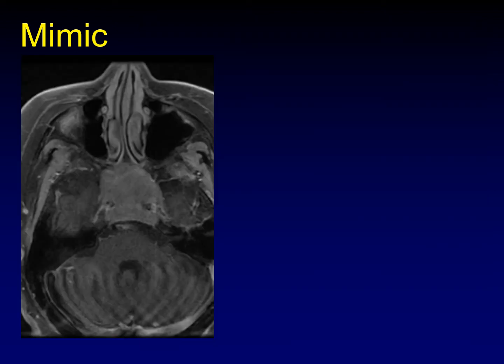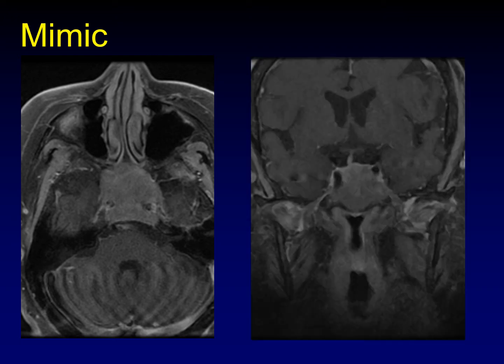This image looks just like T4 nasopharyngeal carcinoma — extensive involvement of the cavernous sinuses surrounding the carotid arteries, breaching back into the posterior fossa. But this is actually an aggressive pituitary adenoma that has extended up and outward. It looks just like nasopharyngeal carcinoma, but it came from the pituitary gland.